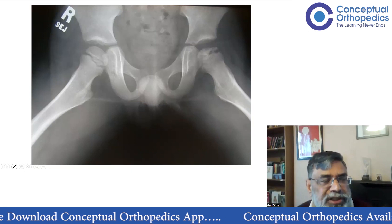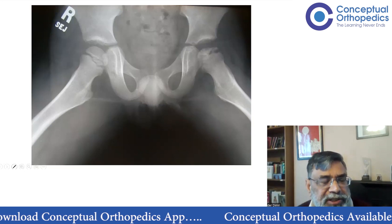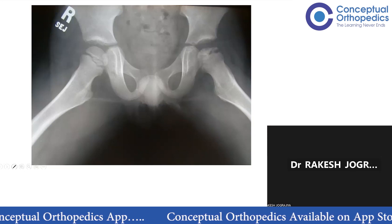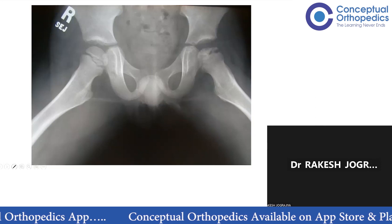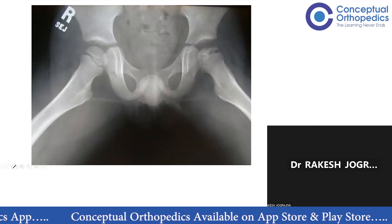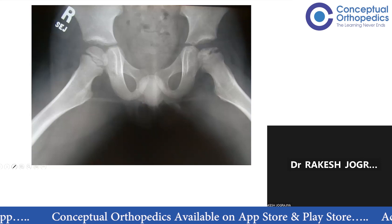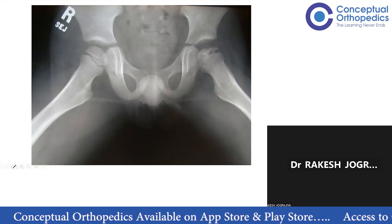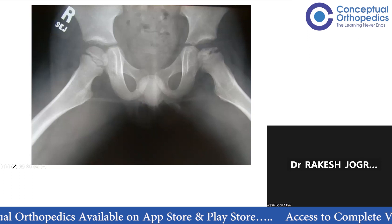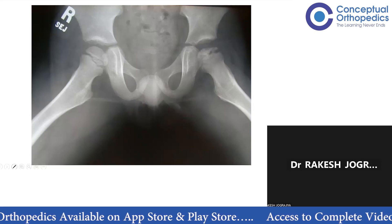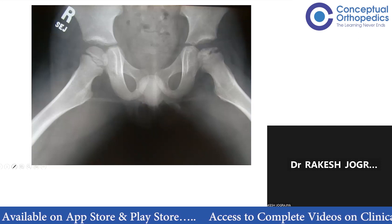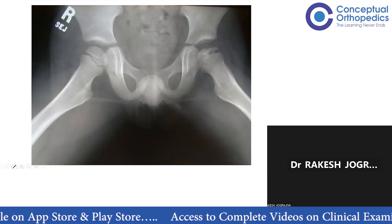Perthes disease is a self-limiting disease in around four to eight year old children. It is avascular necrosis of the femoral head. As a treatment point of view, we have to do early investigation and treatment.